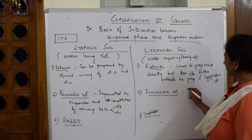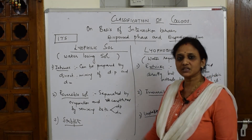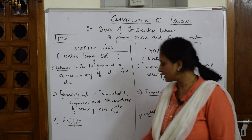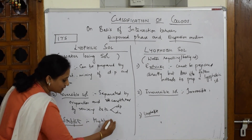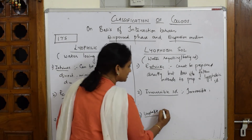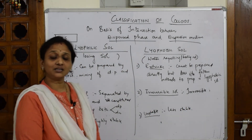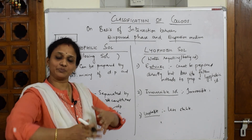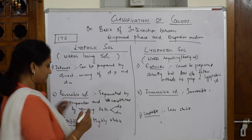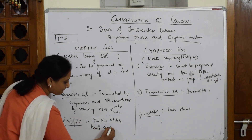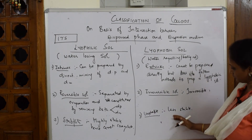Lyophobic sols are irreversible in nature — once formed, they cannot be separated and reconstituted back. Regarding stability: lyophilic sols are highly stable, so they will not coagulate or form a precipitate easily, because they are stabilized by charges. Hence, lyophilic sols cannot be easily coagulated.